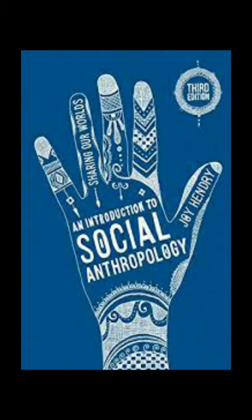The next question is: what are the major subsistence strategies of human populations? The five major subsistence patterns of human populations are foraging — that is fishing, hunting and gathering — pastoralism, horticulture, agriculture and industrialism. As a whole, humankind has moved in the direction of using more complex technology, increasing its numbers and developing more complex socio-cultural systems.